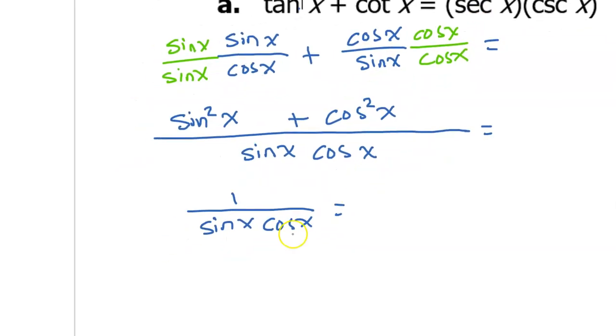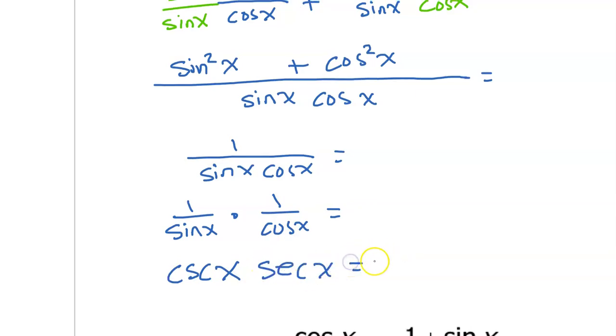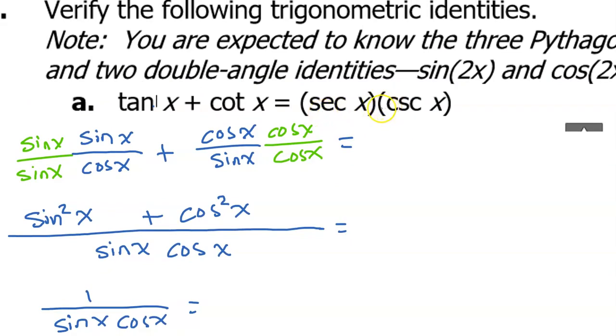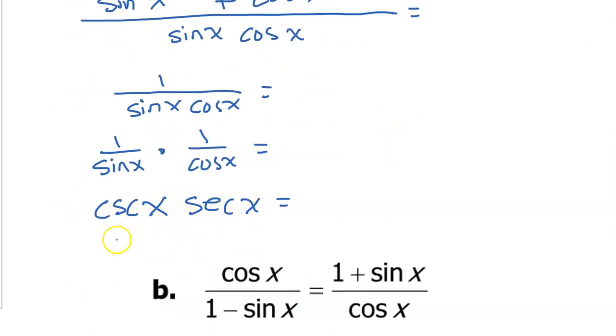Alright, well this can be separated into one over sine x times one over cosine x. And we know that one over sine x is cosecant, and one over cosine is secant. And that's the same as what we were trying to match, secant times cosecant. So I guess if I want it to be perfect then I will switch these around. And then for the last step I always like to go ahead and set them actually equal to each other. So we have now verified that identity.